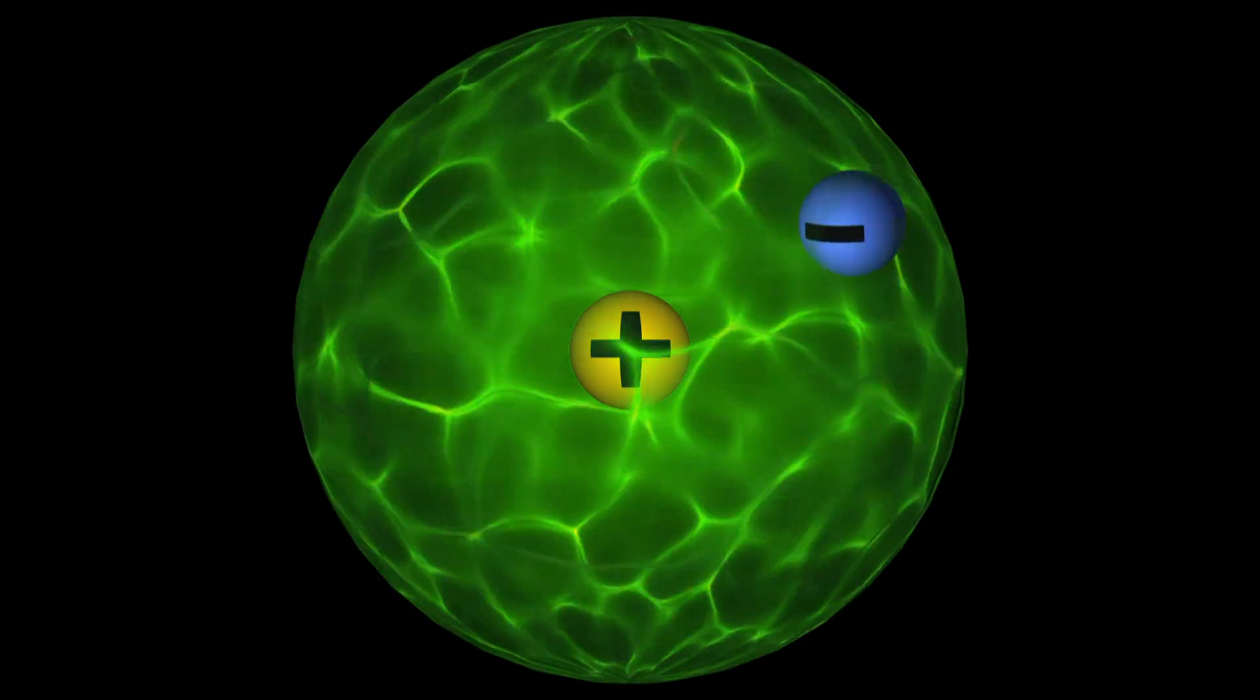That is the next cool thing about matter. What makes matter solid is the electric fields that are both holding the electrons to the nucleus, and also holding adjacent atoms together. Remember that the nucleus of an atom is positively charged, while the electrons are negatively charged.